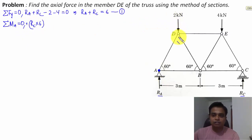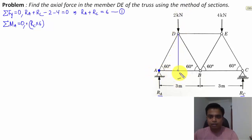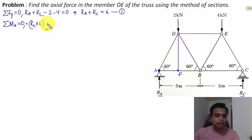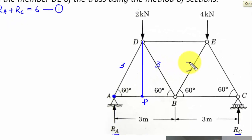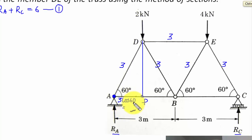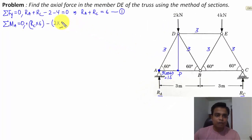For the 2 kN force, we drop a perpendicular to get the moment arm. This 2 kN force produces a clockwise moment at A, so it gets a negative sign: minus 2 multiplied by the perpendicular distance AP. Since all angles are 60° and all sides are 3 m, the distance AP works out as 3 cos 60° = 3 × (1/2) = 1.5 m. So the term is minus 2 times 1.5.